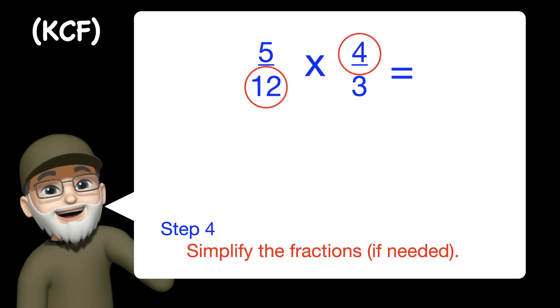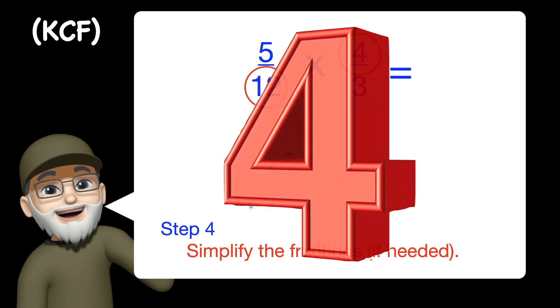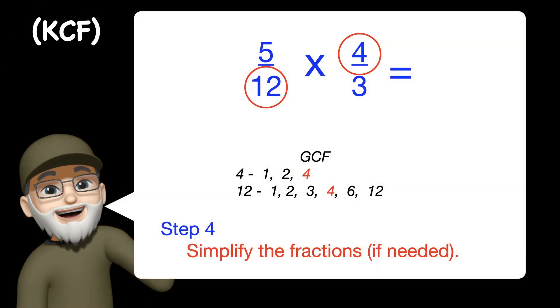12 and 4, however, we can simplify because they share a greatest common factor of 4, which means that we can divide each by 4. 12 divided by 4 is 3, so we rewrite that fraction as 5 thirds. 4 thirds, the 4 divided by 4 is 1, so we now have 1 third.